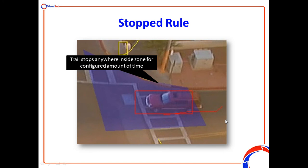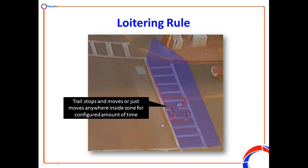The stopped rule is where the trail stops anywhere inside the zone for a configurable amount of time, so you can detect if something stops within a particular zone. Very similar is the loitering rule, where the trail stops or just moves anywhere inside the zone for a configured amount of time. For example, maybe you want to detect if someone loiters in front of your house on the curb because they're perhaps casing the joint — even if they're slowly moving backwards and forwards, they're loitering within that zone. That might trigger an event which sends you an email, prompting you to go back and look at the recorded footage.